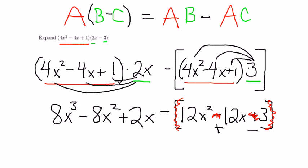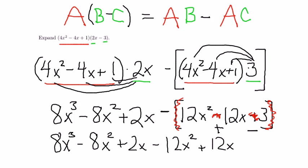So, I'll copy that over pretty quickly. 8x cubed, minus 8x squared, plus 2x, minus 12x squared, plus 12x, and then minus 3.